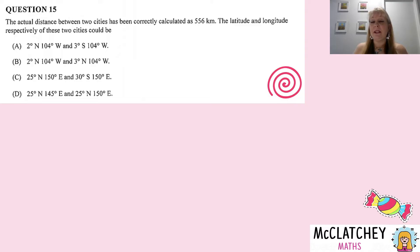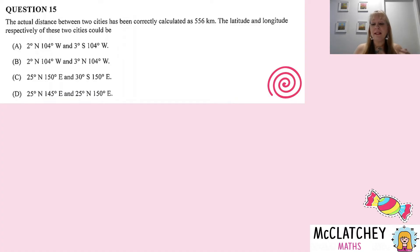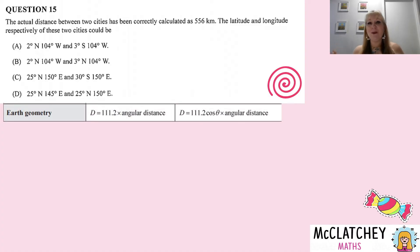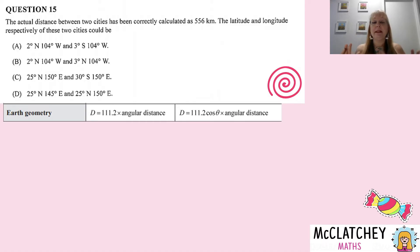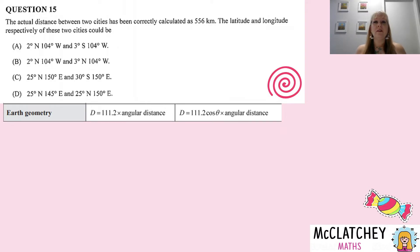Question 15: the actual distance between two cities has been correctly calculated as 556 kilometers. The latitude and longitude respectively of these two cities could be — and we have four multiple choice options. One way to go about this is to pull up your formula sheet. In Queensland, Australia, yours might look a little different. You could take the two sets of coordinates for each option, plug them into the correct formula, work out the distance, and one of the four will give you 556 kilometers. That could take quite a while.